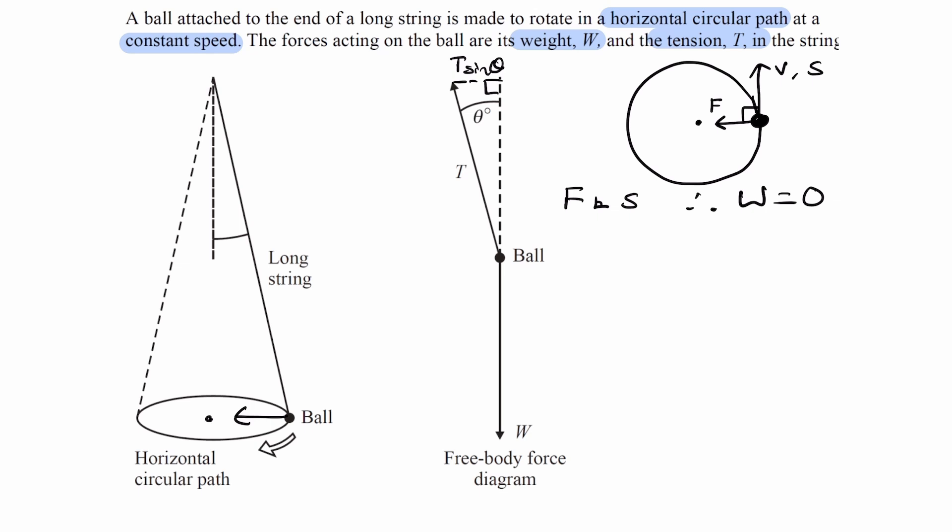because work done is equal to force times displacement, but more specifically, it's equal to the component of force that's parallel to displacement, that component of force multiplied by the displacement. So if the two things are perpendicular, there is no force in the direction of displacement, and therefore the work done will be zero.